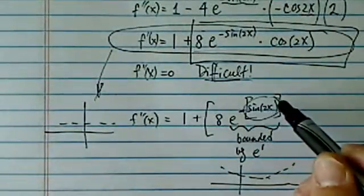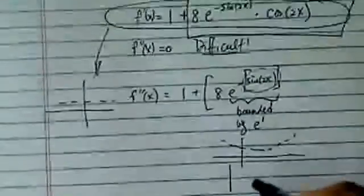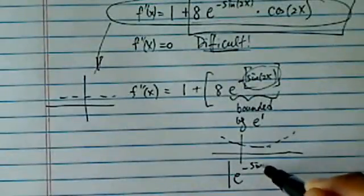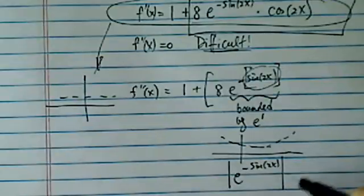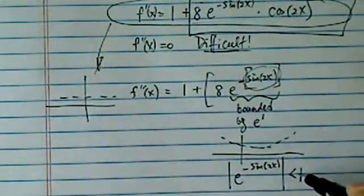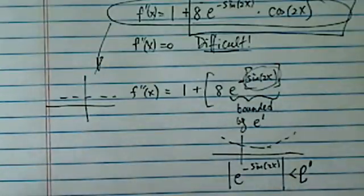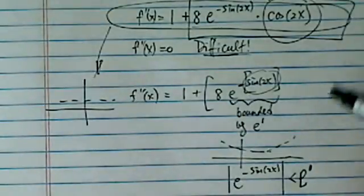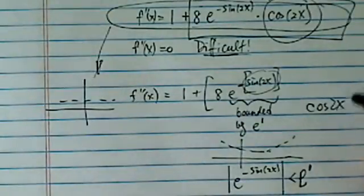For that reason, the max value of the absolute value of e^(-sin(2x)) is bounded by e^1, not one, e to the one. So that doesn't have any periodicity that's dominating. The dominating term is actually the cos(2x) term.